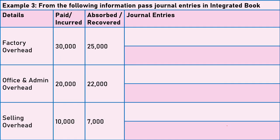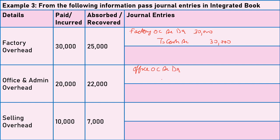Our next example is related to overheads. Overheads are also an expense and all expenses are debited. For payment of factory overheads: Factory Overhead Control Account Dr. to Cash Account. For payment of office overheads: Office Overhead Control Account Dr. to Cash Account — Rs.20,000. For payment of selling overheads: Selling Overhead Control Account Dr. to Cash Account — Rs.10,000.